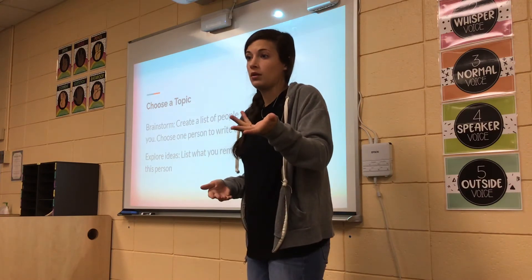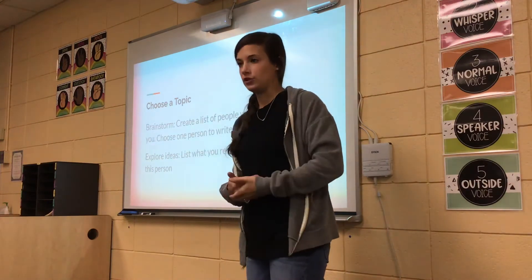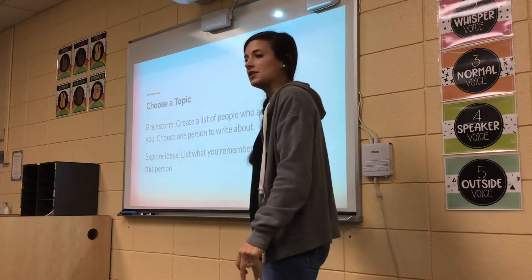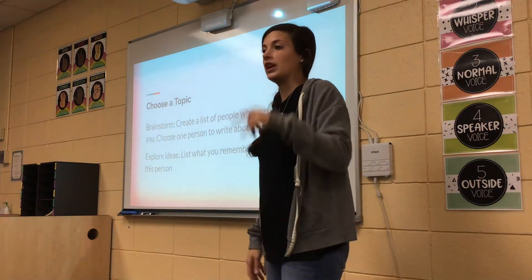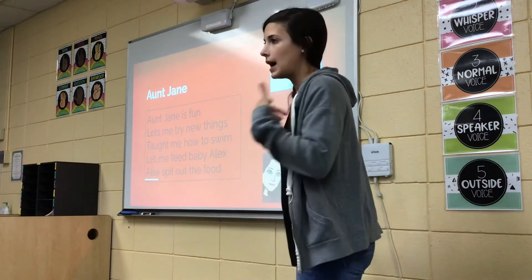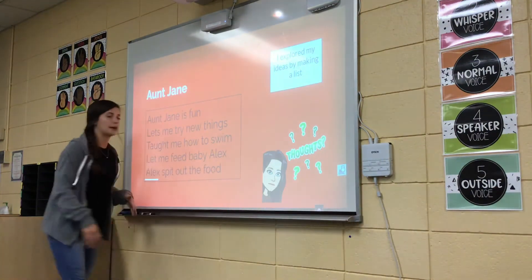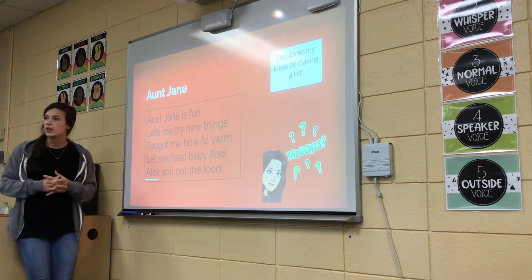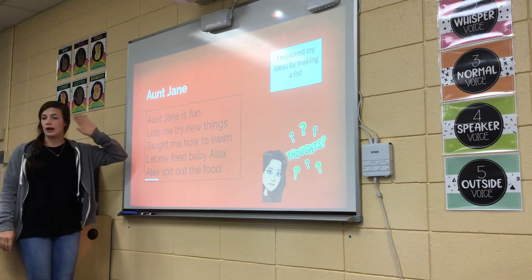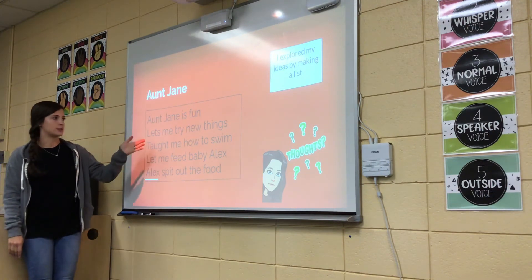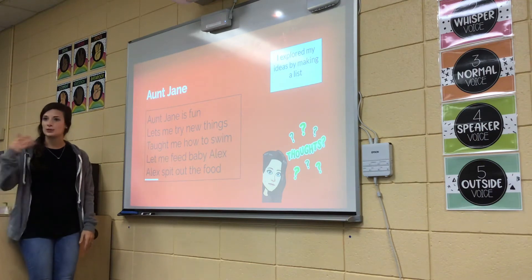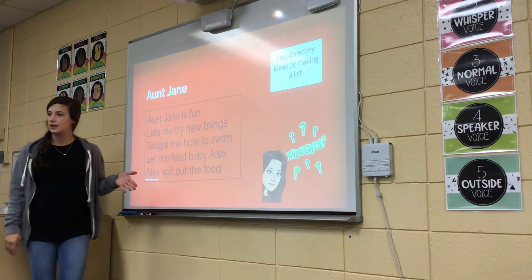So like your fishing trip — who did you go with? Your dad. So you would write about your dad and the fishing trip. And your brother, and your dad's friend EJ. You explore ideas by listing what you remember about being with those people, then include details about that experience. Here's my example list: I made a list of people important to me. I chose Aunt Jane. I wrote: Aunt Jane is fun, lets me try new things, taught me how to swim, let me feed baby Alex, and then Alex spit out the food. That's what I remember about Aunt Jane and those experiences.